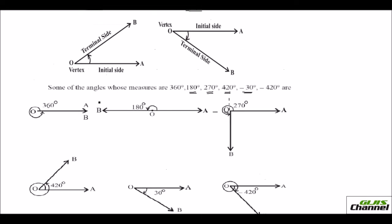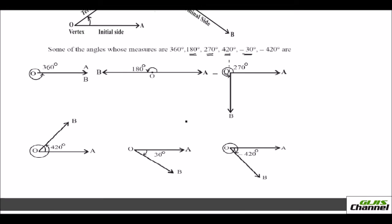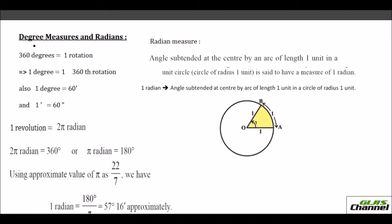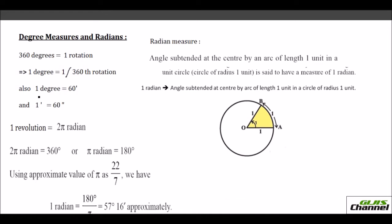So this is how the angles are represented in degree measures. Here I have explained the relationship between the degree measures and the radians. One full rotation makes 360 degrees. So what is one degree? One degree would be 1 over 360th of a rotation. You can also say that one degree is 60 minutes and each one minute is 60 seconds. So these are the measures.